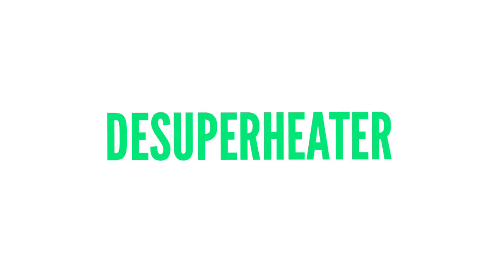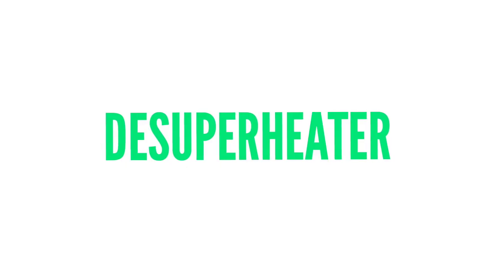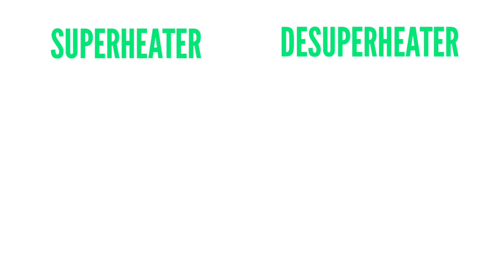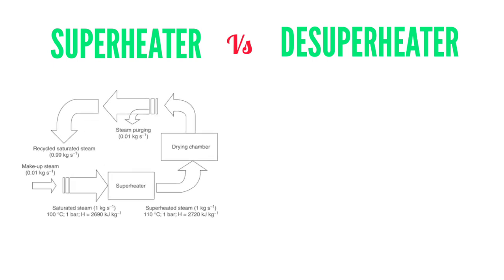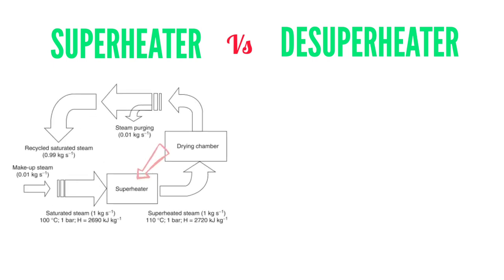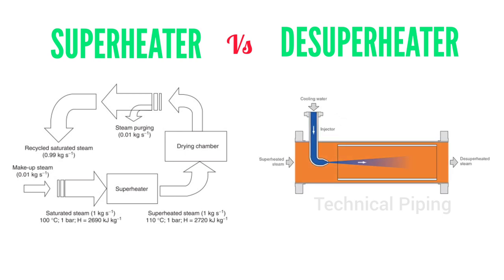Let's know the use of superheater and desuperheater devices. A superheater is a device used to convert saturated steam or wet steam into superheated steam. A desuperheater is a device used to lower the temperature of superheated steam.